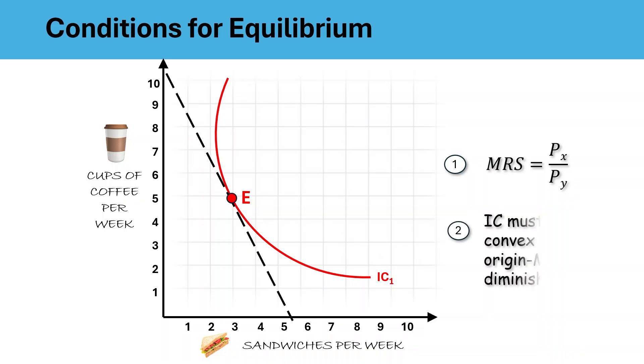The second condition for equilibrium is that the MRS must continuously fall. In other words, the indifference curve must be convex to the origin. Why? When a consumer keeps choosing more of good X, they should be willing to give up less and less of good Y due to the law of diminishing marginal rate of substitution. Now, if this marginal rate of substitution didn't fall, say if the curve was not a curve but a straight line, it means the consumer would never settle at any one option. They would keep switching between combinations and no stable equilibrium would be reached. So these are the two conditions which must be satisfied to determine consumers' equilibrium.